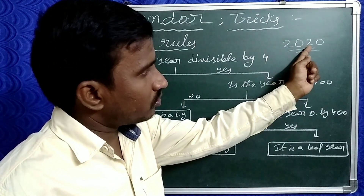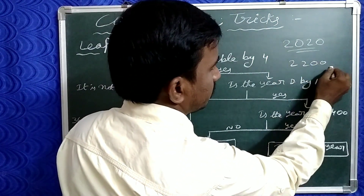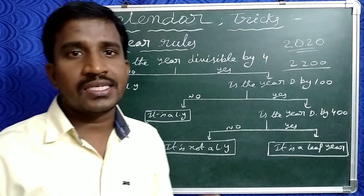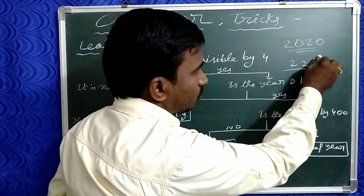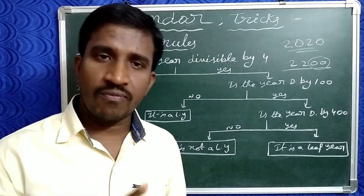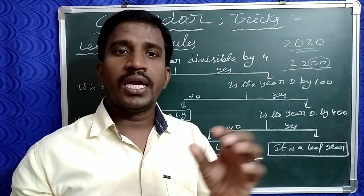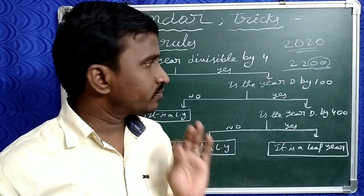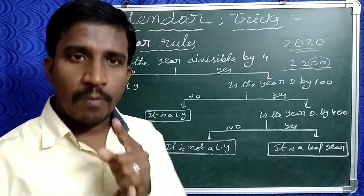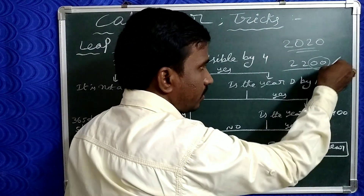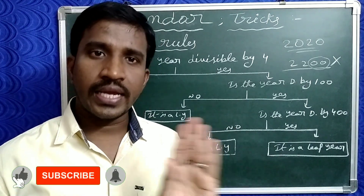That's why 2020 is a leap year. But 2200 — 2200 is also exactly divisible by 4, because the last two digits are exactly divisible by 4. But it is not a leap year, because multiples of 100 are not leap years.